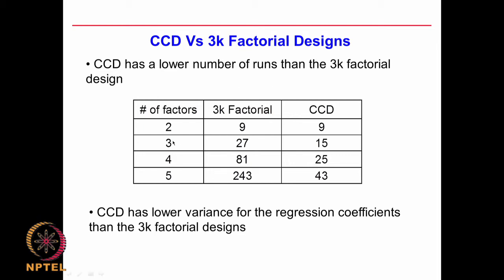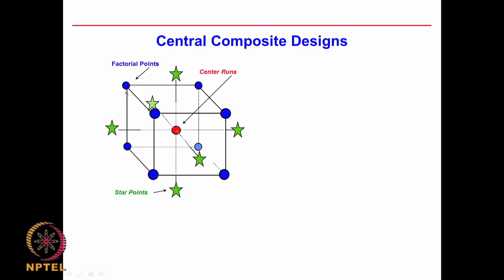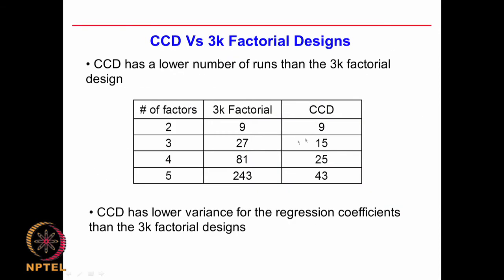For a 3-factor problem, 3^3 = 27 experiments, whereas with CCD I can do 15 experiments — 8 for the 2^3 factorial, 1 center point, and 6 star points. For 4 factors, 3^4 = 81 experiments, but CCD needs only 25. For 5 factors, 3^5 = 243 experiments whereas CCD gives 43 experiments. The number of experiments goes down dramatically, with lower variance because I am looking at different levels of each factor. We can also go to fractional factorial of 3^k.